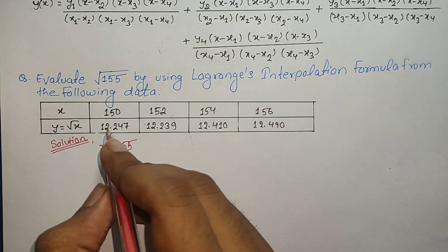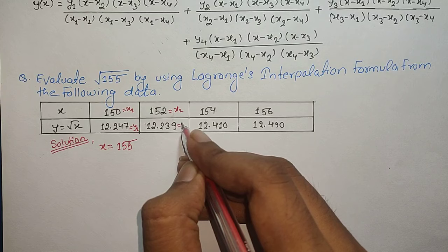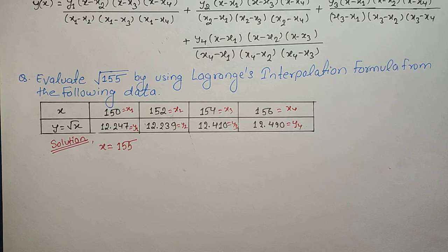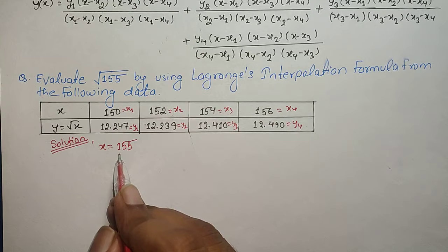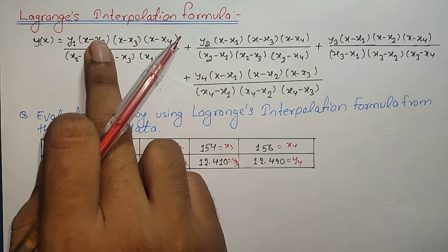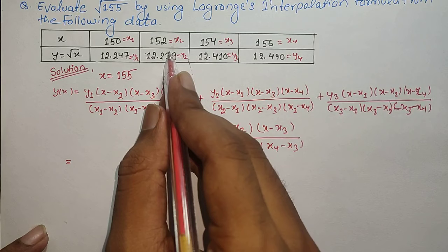From the table, let x1 = 150, so y1 is the corresponding value. Let x2 = 152, with y2 as its value. Let x3 = 154 with y3, and x4 = 156 with y4. Now let us apply the formula to find the value of y corresponding to x = 155, substituting y1, x, x1, x2, x3, x4 into the formula.